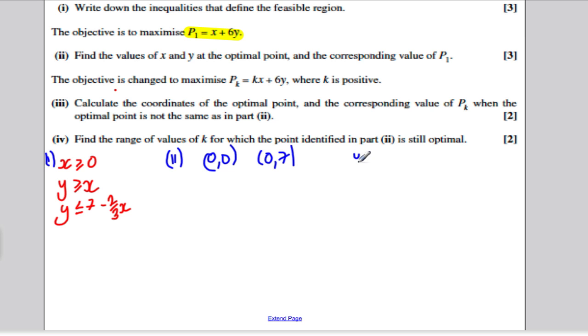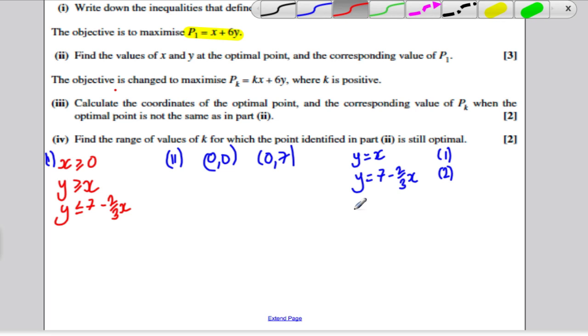So for the other one, we want the intersection of the line Y equals X with the line 7 minus 2 thirds X. To find this intersection, we solve simultaneously. Y is equal to X, so substitute that into equation 2. We would get X is equal to 7 minus 2 thirds X.